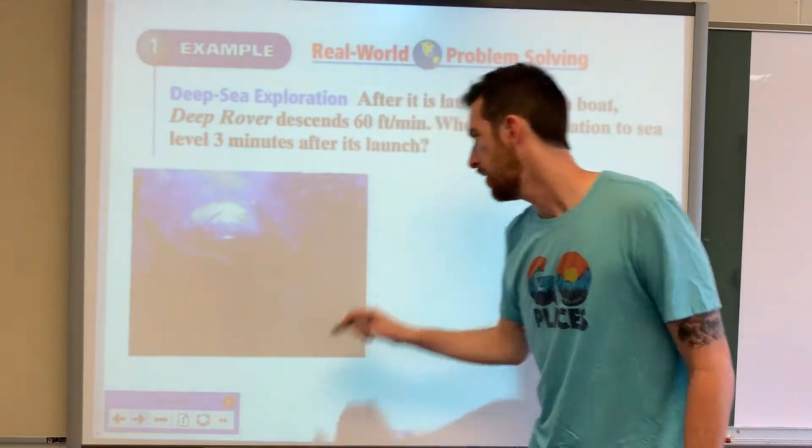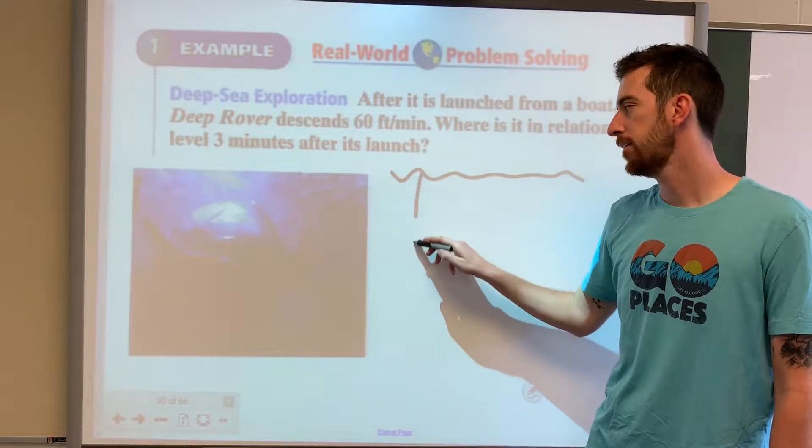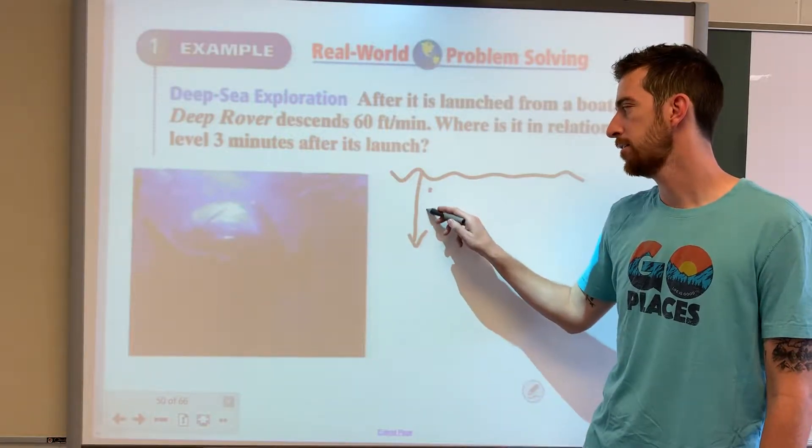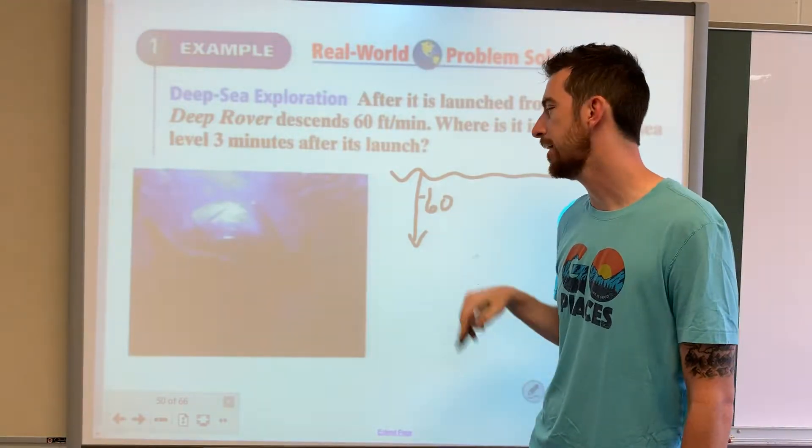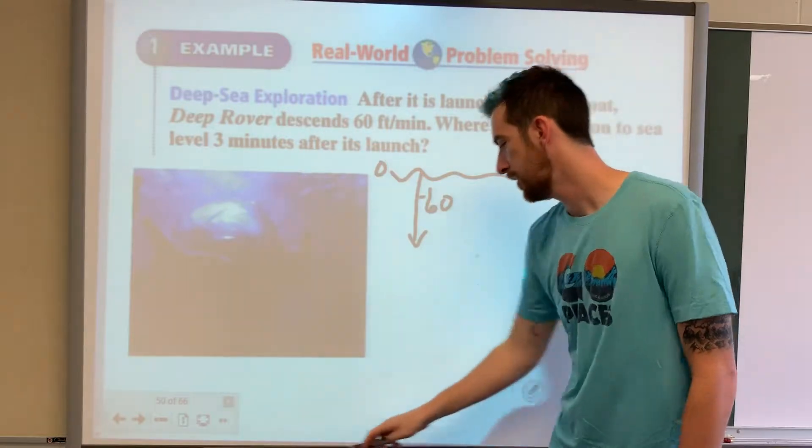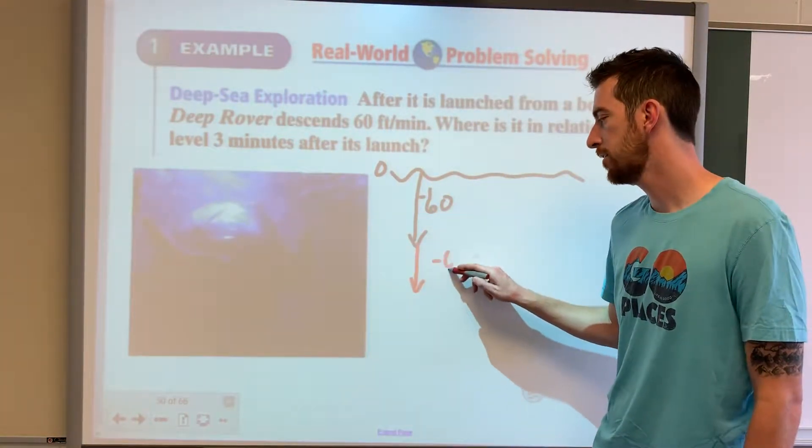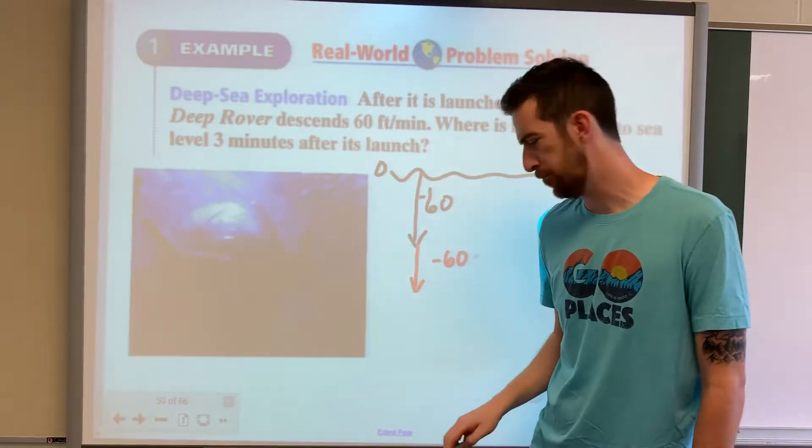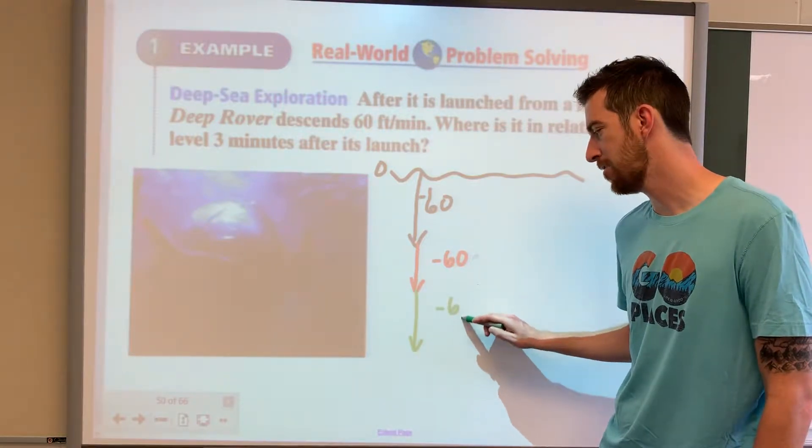If here is the sea level at zero minutes, one minute it's down here 60 feet, but it's going down so we're going to indicate that as negative 60 feet. So here's sea level at zero, minute two it's going down another 60 feet, and minute three it's going down another 60 feet.